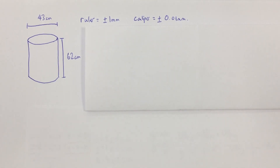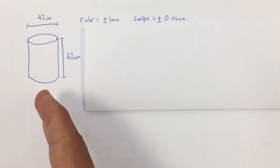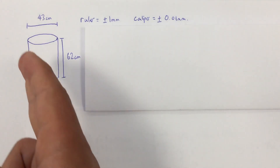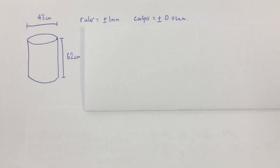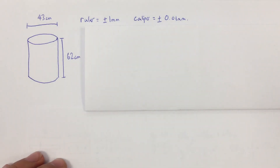This video is for A-level physics, looking at the rules around uncertainties and how we use them when dealing with equations and calculations. We're going to work out, for a cylinder with a diameter of 43 centimetres and a height of 62 centimetres, the values for the circumference, the area, and the volume, and work out the absolute uncertainty for each of those.